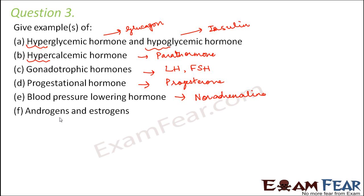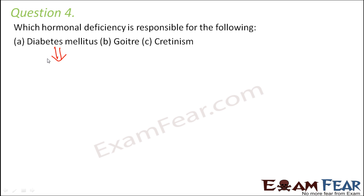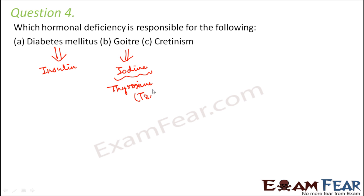An example of an androgen is testosterone, and an example of estrogen is estradiol. Question number four: which hormonal deficiency is responsible for the following? Diabetes mellitus is caused by deficiency of insulin, which leads to increased glucose levels in the blood. Goiter is caused by deficiency of iodine, which impacts the thyroid hormones T3 and T4. Cretinism is also caused by deficiency of thyroid hormones, resulting in retarded mental and physical growth in children.